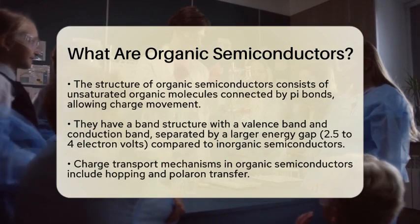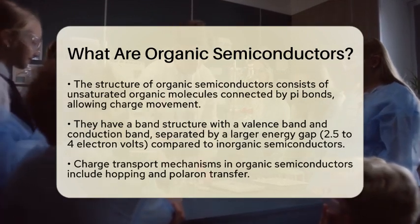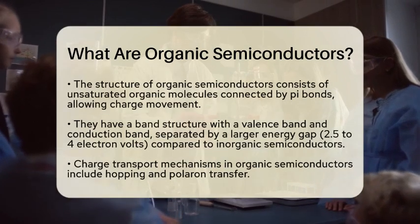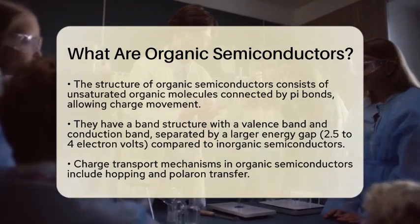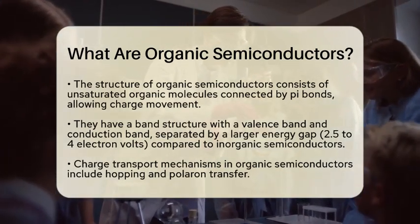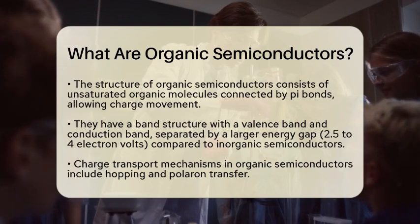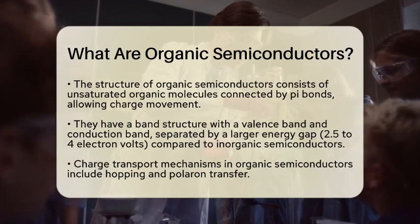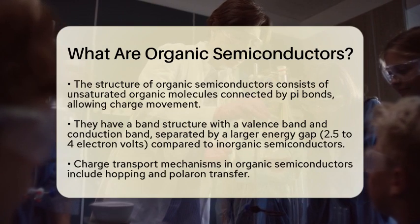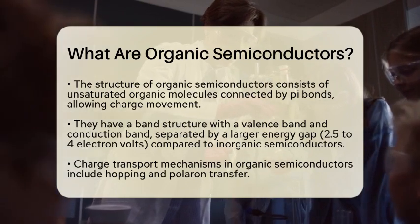They are constructed from unsaturated organic molecules that are connected by pi bonds. These pi bonds are essential because they allow charge carriers to move through the material. The band structure of organic semiconductors consists of a valence band and a conduction band, separated by an energy gap.